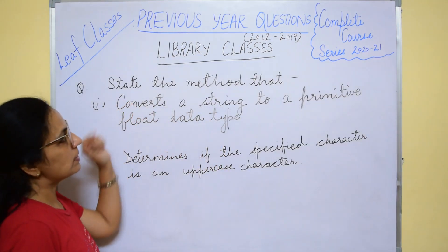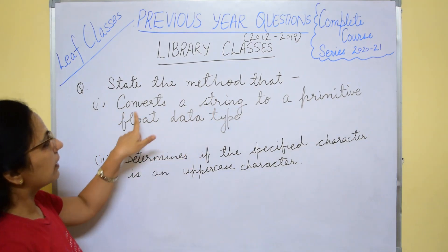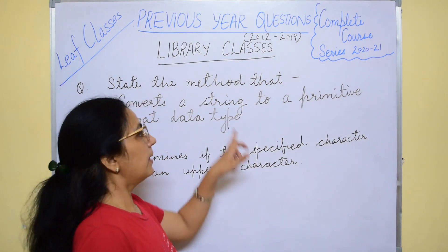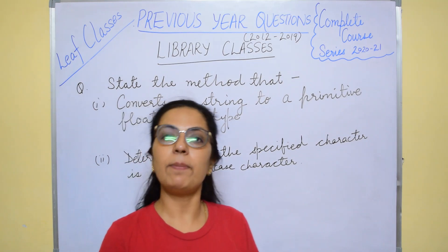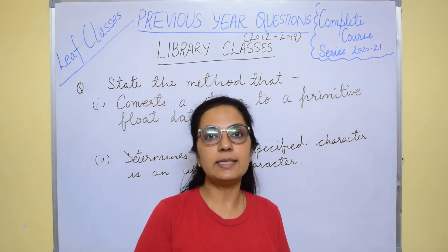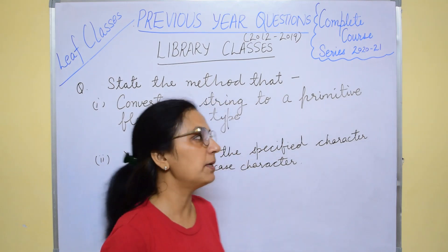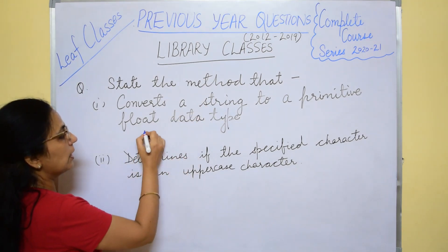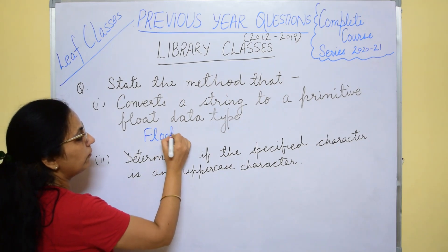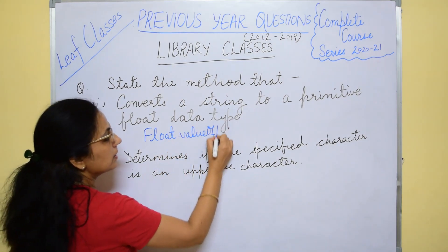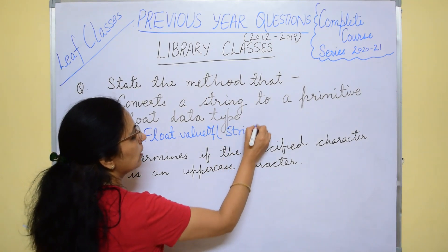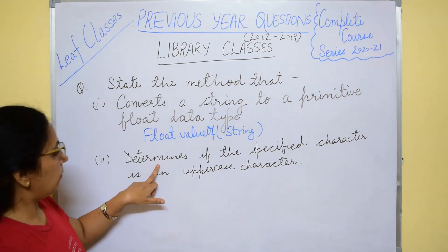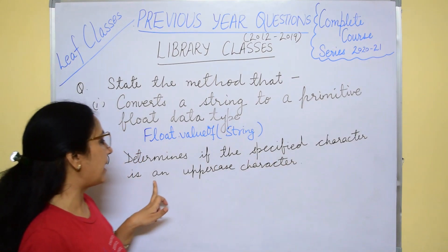Let's begin with the question of 2012: state the method that converts a string to a primitive float data type. So here the conversion is from string to a primitive data type. In the previous video we covered all these conversions from string to different primitive data types — you can refer to that video. The answer: to convert string to float, the wrapper class function is Float.valueOf(string).